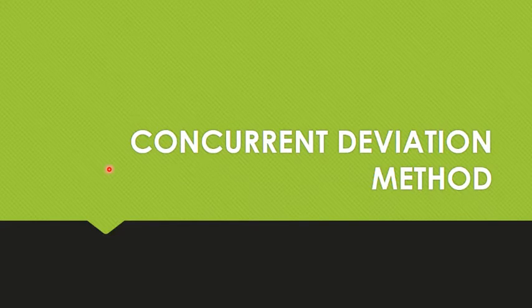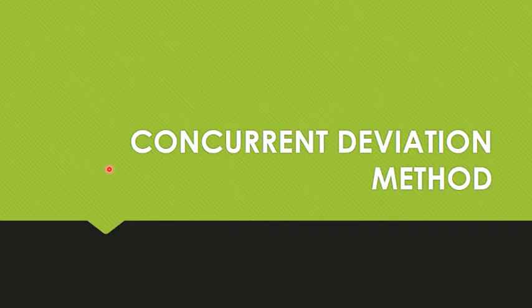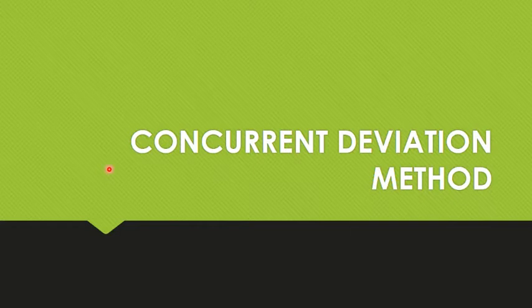The next step is the Spearman Correlation Coefficient, and the Karl Pearson Correlation Coefficient, and the Spearman rank method. The Master's Course can be used in this step. This method is also known as the Biserial Correlation Coefficient and the Procedure Correlation Coefficient.